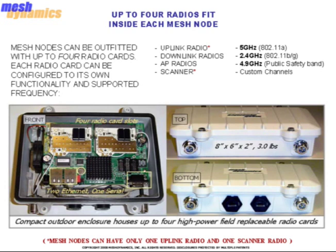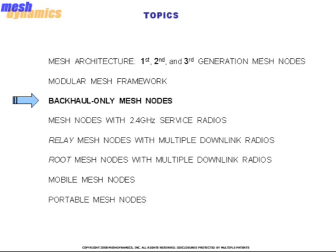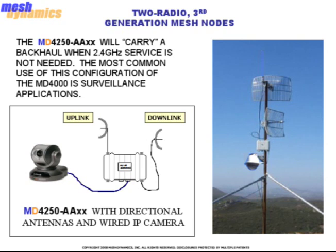Next, we will talk about backhaul-only mesh nodes. These are the simplest third generation mesh nodes, having no client or AP radios, only the uplink and downlink backhaul radios. The MD-4250-AAXX is a backhaul-only mesh node that will carry a backhaul when 2.4 GHz service is not needed. The most common use of this configuration is surveillance applications. As can be seen in the photo to the right, the IP camera is wired directly into the mesh node, and each backhaul radio gets its own antenna.